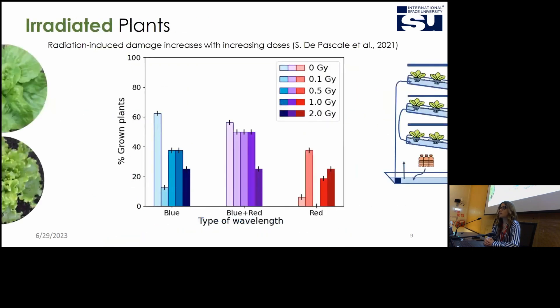First of all, the seeds were irradiated with x-rays from 0 to 2 grays as you can see here and I compared the percentage of grown plants with the type of wavelength that is the blue, blue-red and red case. As we can see the blue and blue-red cases have a higher percentage of grown plants with respect to the red case.